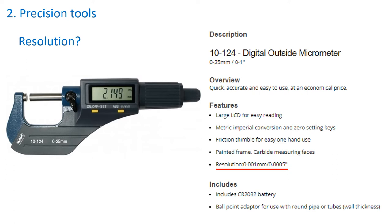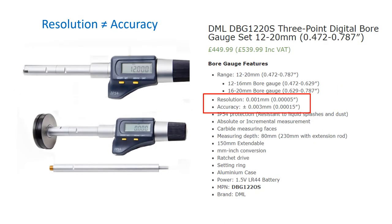Let's introduce a new term: resolution. Resolution is basically how small the numbers go on the instrument. Here we can see the display goes to the third decimal place — 0.001. Just because an instrument can display microns does not mean it can measure microns — resolution is not accuracy. Precision will also rely on the skill of the measurer and features on the device, like a ratchet thimble that allows the same pressure to be applied every time, which increases precision.